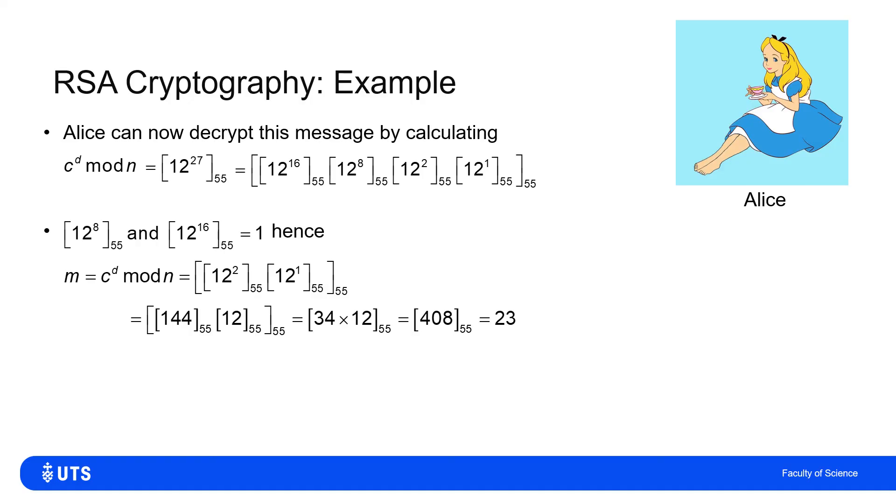So Alice has fairly quickly decoded Bob's message. He wanted to send 23. He encoded that as a 12. Alice got 12 and decoded it back to 23.